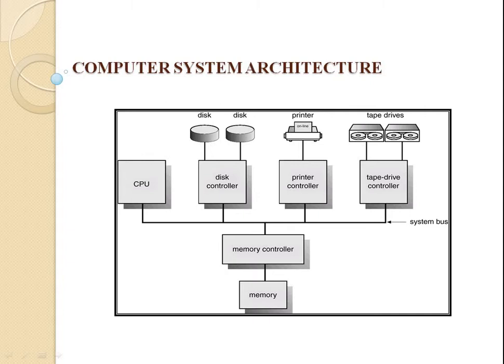The occurrence of an event is usually signaled by an interrupt from either hardware or software. The hardware may trigger an interrupt at any time by sending a signal to the CPU, usually by way of the system bus. The software may trigger an interrupt by executing a special operation called a system call. When the CPU is interrupted, it stops what it is doing and immediately transfers execution to a fixed location.